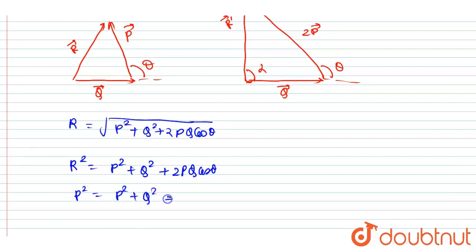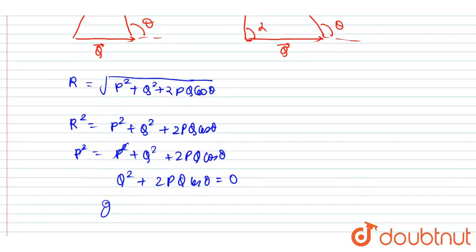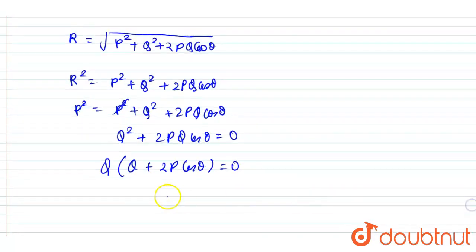So this P squared will get canceled out and you will get Q squared plus 2PQ cos theta is equal to zero. Now if I take this Q common, then I will get Q plus 2P cos theta is equal to zero.